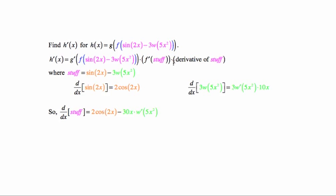So I'm going to go back and substitute for stuff, I'm going to substitute in sine of 2x minus 3w of 5x squared. And for the derivative of stuff, I'm going to substitute this in. And that's where the parentheses really, really matter.